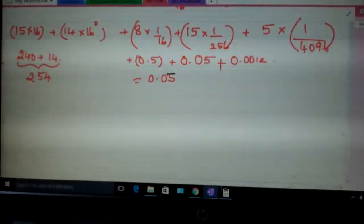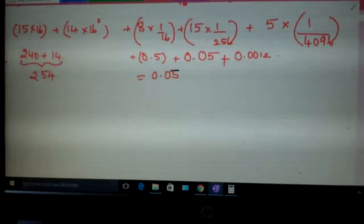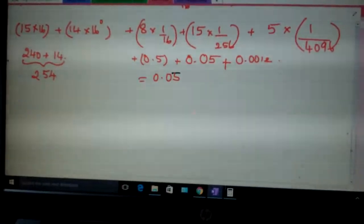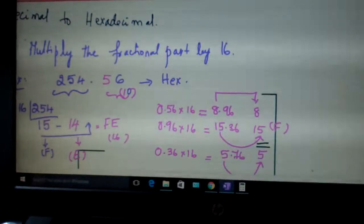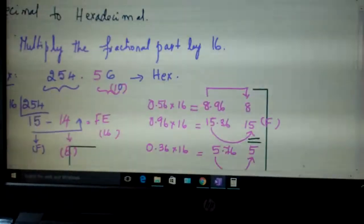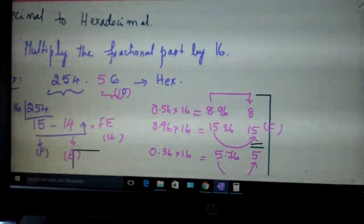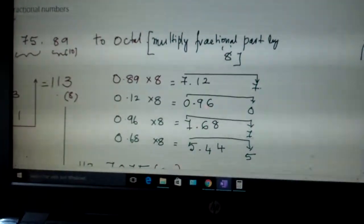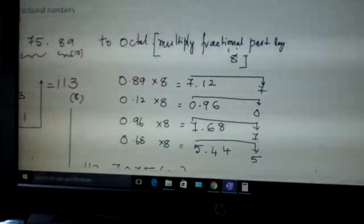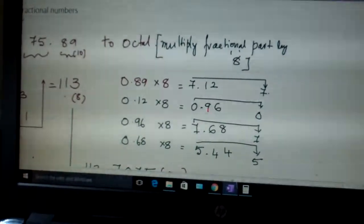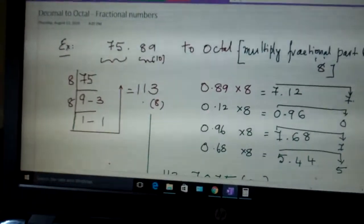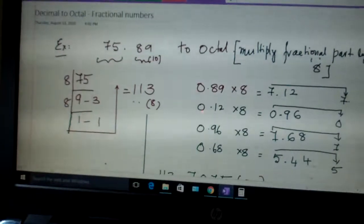Same way decimal to octal. We will be multiplying it with 8. So when you are doing this, some example I have taken here: 75.89. So once again, consider the whole number part, 75. Go on dividing it by 8. Write the remainders in this order. You get this.